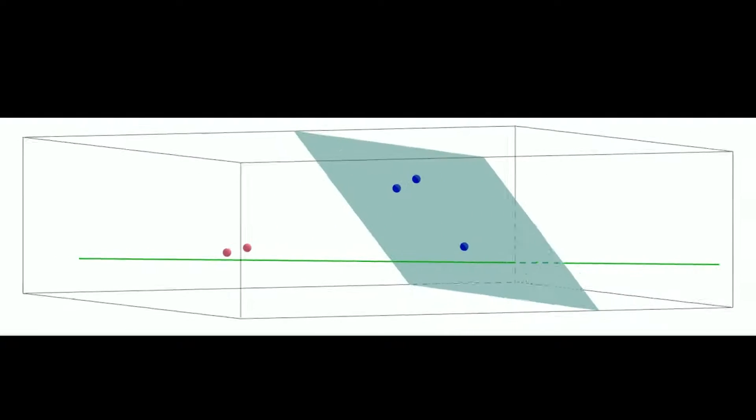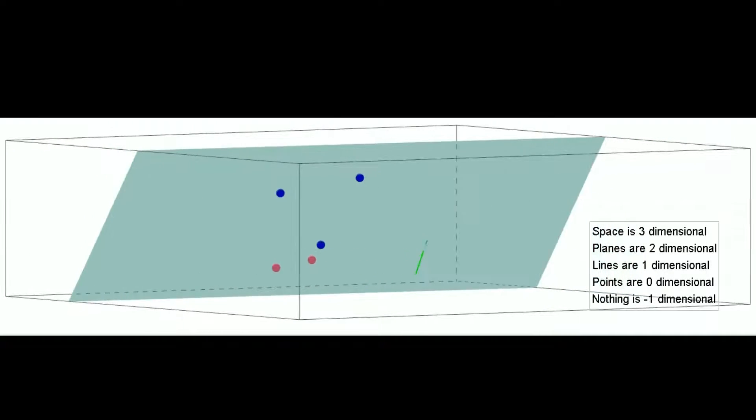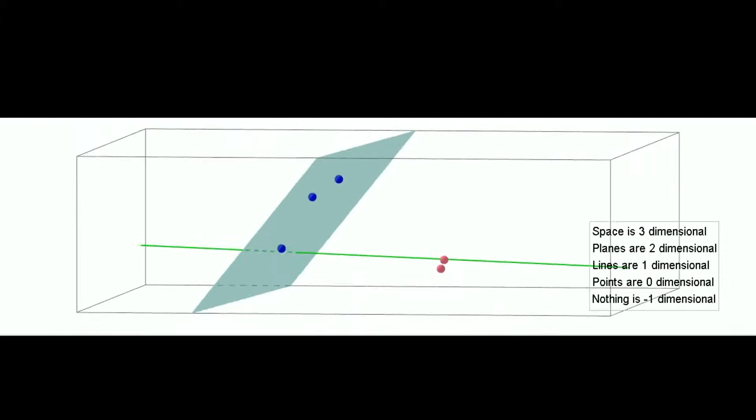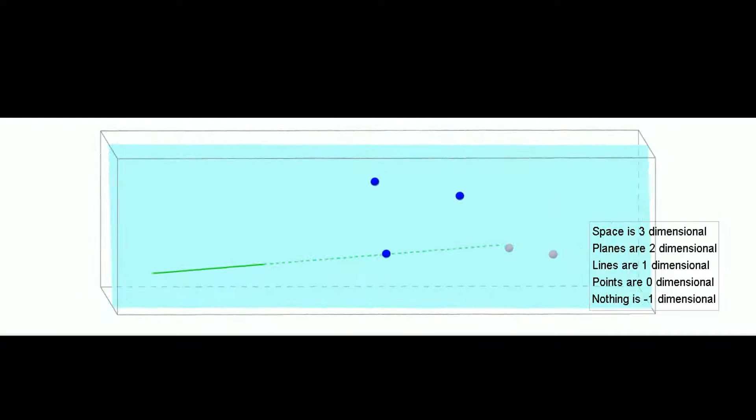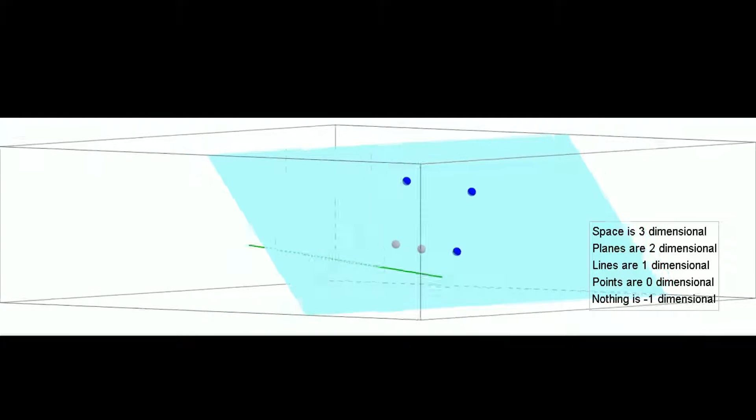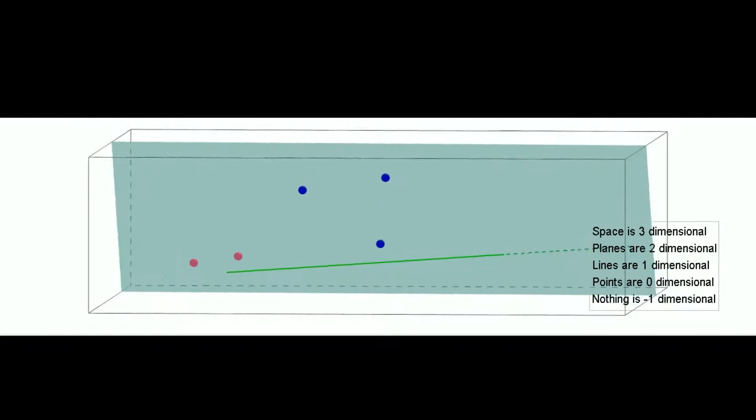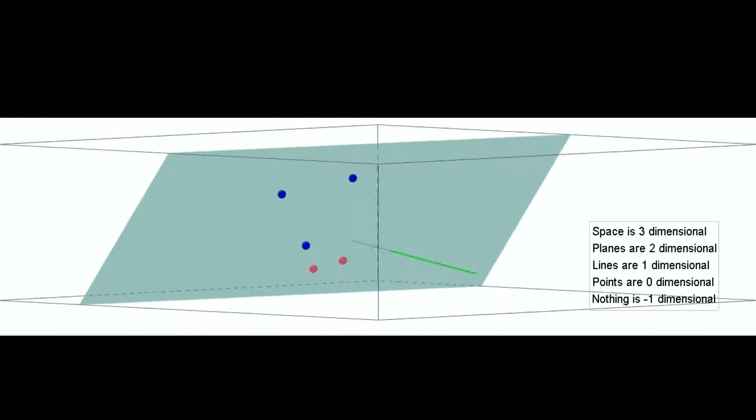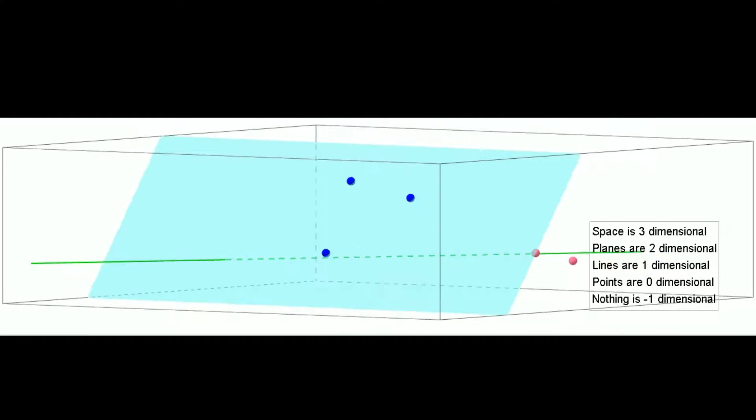And the fifth element for our consideration is nothing. So, nothing, just fitting with the pattern, we think of as being negative one-dimensional. So, these are our fundamental objects in projective geometry. And, in addition to other things, we're very interested in how these objects can interact with each other.